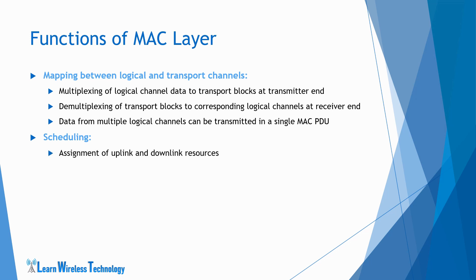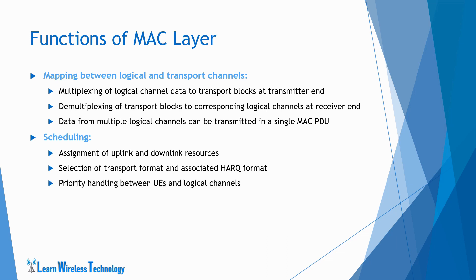Scheduling is the assignment of uplink and downlink resources for data transfer. The MAC layer performs all scheduling-related functions in the uplink and downlink. The MAC layer selects the transport format associated with all transport channels. Transport format is the format defined for the delivery of transport blocks on transport channels. MAC also includes HARQ functionality and selects the associated HARQ format. Since all the scheduling is done at the E-NodeB, for uplink resource assignment, the MAC layer at the UE is responsible for reporting scheduling-related information such as UE buffer occupancy and power headroom. MAC layer handles the priority between multiple UEs and also handles the prioritization of different logical channels for one UE.